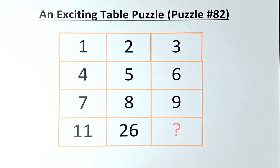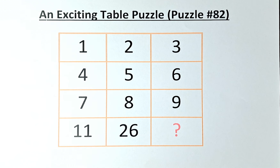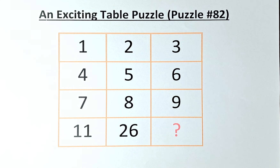Welcome back to the solution of puzzle number 82. The numbers in the puzzle are 1, 2, 3 in the first row; 4, 5, 6 in the second row; 7, 8, 9 in the third row; and 11, 26, and the question mark in the final row. In fact, this puzzle has two solutions. If you have solved them both, well done. If not, one answer will be just fine. We're going to solve one puzzle by the rows and another by the columns.